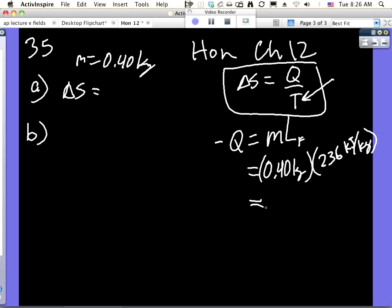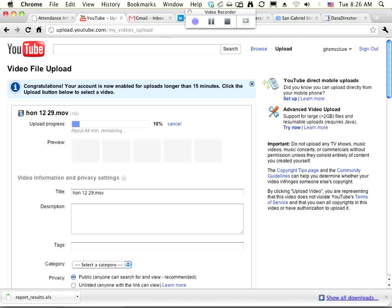And then that amount of heat is being removed from this stuff, and you have to put that over the freezing point, or whatever the freezing slash melting point of silver.